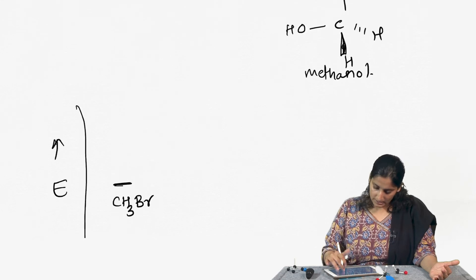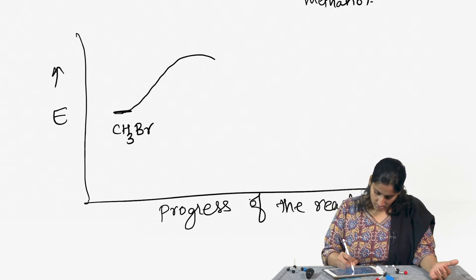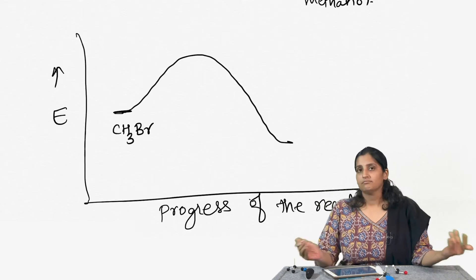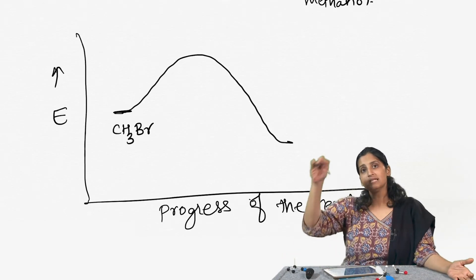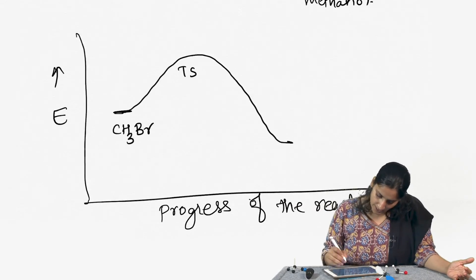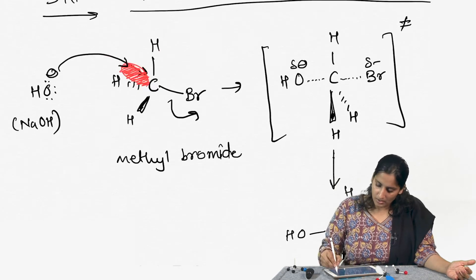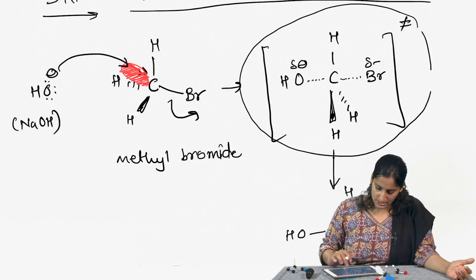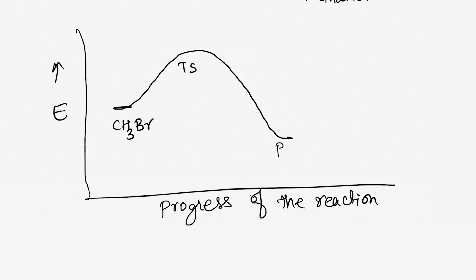The reaction goes over just one single hill, or one single transition state. This transition state is the one we have drawn. Then you end up forming the products, which is our methanol molecule. In the SN2 reaction you do not have any intermediates formed, so there are no valleys in the energy profile diagram — it is just one single hill.